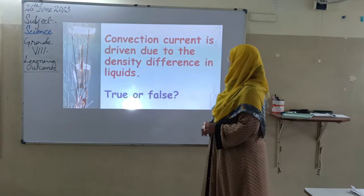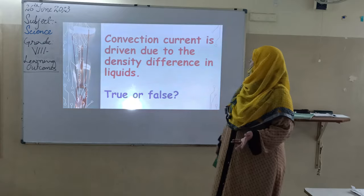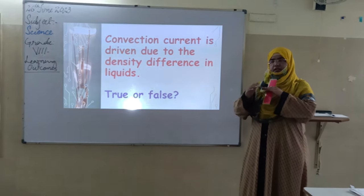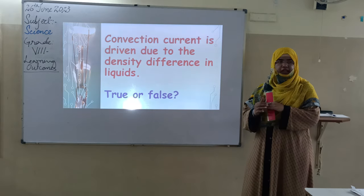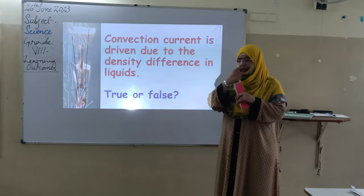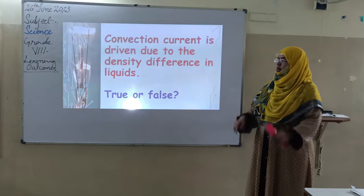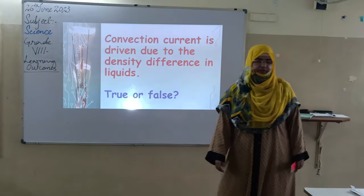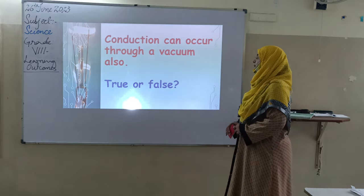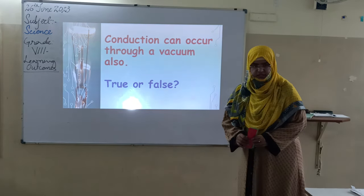Next question: convection current is driven by the density difference in liquids. This means convection current happens due to differences in the densities of the liquid — like what happens to the color when we pour drops and start heating, forming a convection current. Yes, it's true. Next question: conduction can occur through a vacuum. Yes, it's not possible.